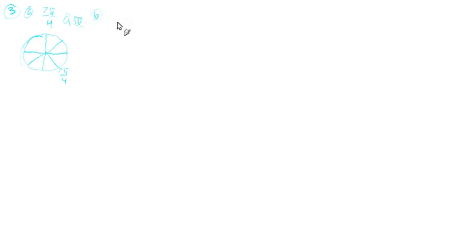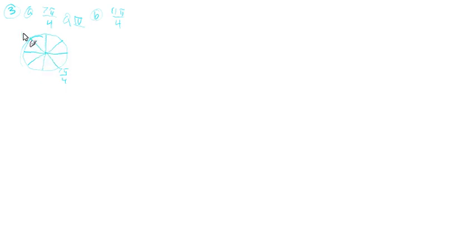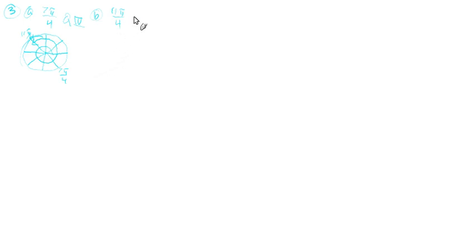Part B is 11π over 4. We've already counted around to 7π over 4, so we just keep going: 8, 9, 10, 11π over 4. We can keep going around and around forever. So counting: 8π over 4, 9, 10, 11π over 4 — that would be Quadrant 2.